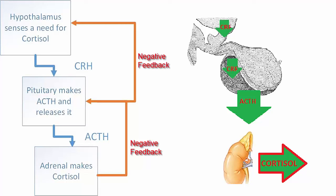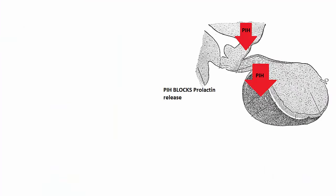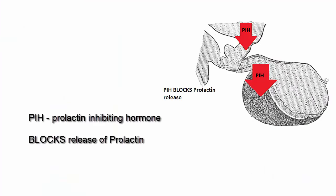Some hypothalamic releasing factors are actually inhibitory in nature. For example, prolactin inhibiting hormone is secreted to block the release of prolactin from the anterior pituitary. As long as the hypothalamus is making prolactin inhibitory hormone, the anterior pituitary won't release prolactin.